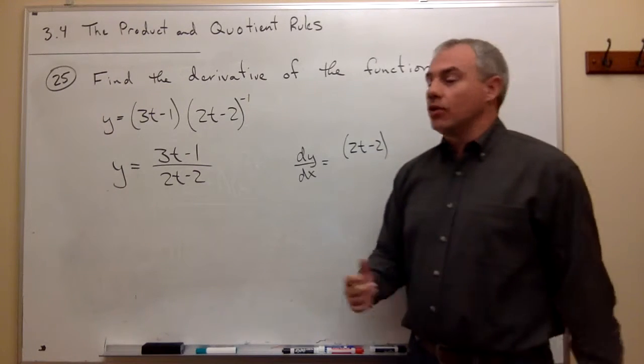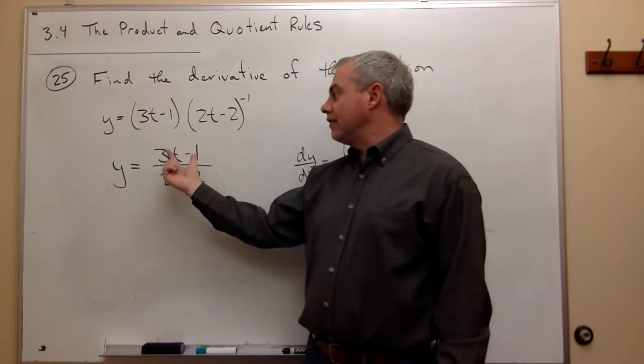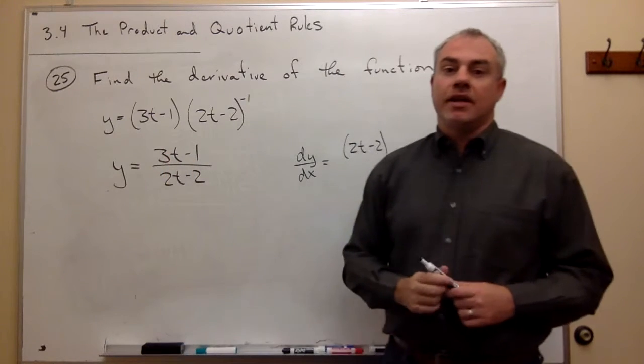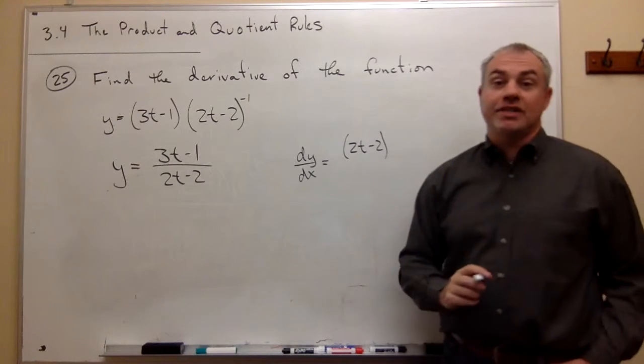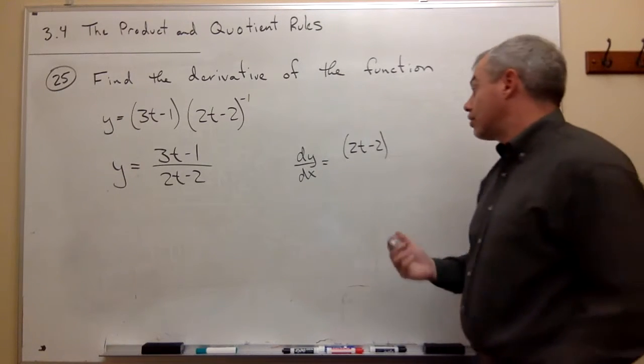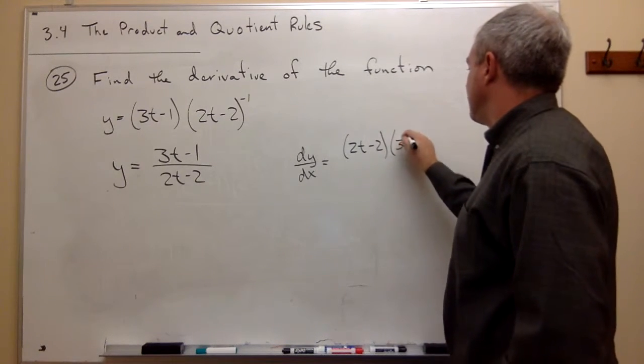Then I multiply that by the derivative of what's on the top. In this case, on top, we have 3t minus 1, and the derivative of 3t minus 1 is 3. So I multiply by 3.